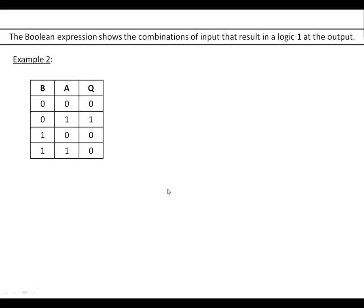Second example. What we've got now is B is low and A is high. When that's the case Q will be high. The way that we write this, because B is low we need to put it through a NOT gate, so we just write NOT B and A. So the Boolean expression tells us that Q is high when B is low and A is high.